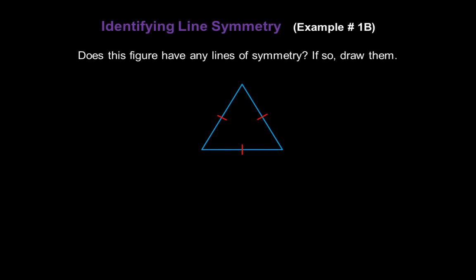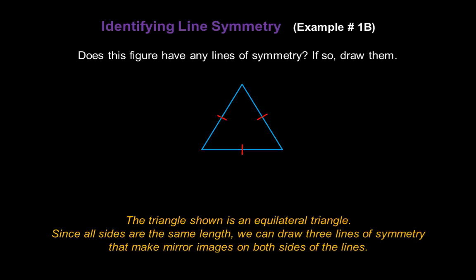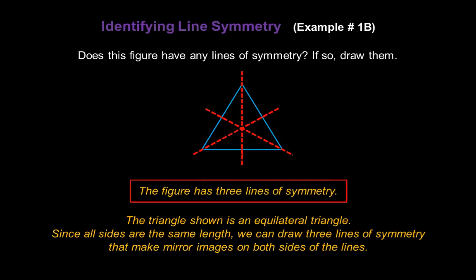Does this figure have any lines of symmetry? If so, let's draw them. The triangle shown is an equilateral triangle — all three sides are the same length. Since all sides are the same length, we can draw three lines of symmetry that make mirror images on both sides of the lines. One line of symmetry would look like this, another would look like this, and the third would look like this. So this figure has three lines of symmetry.